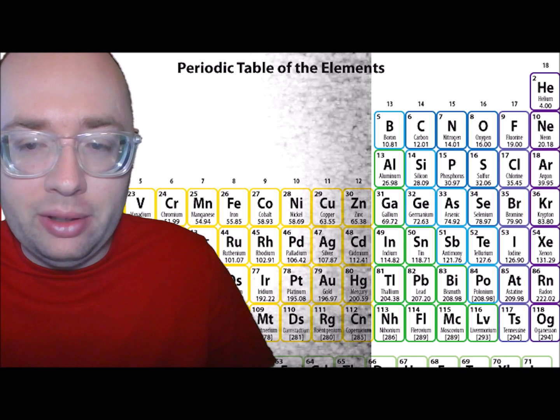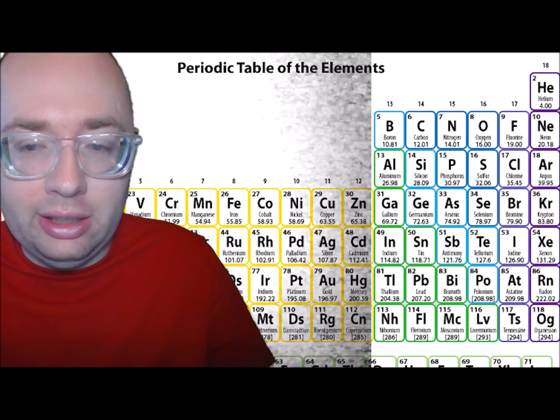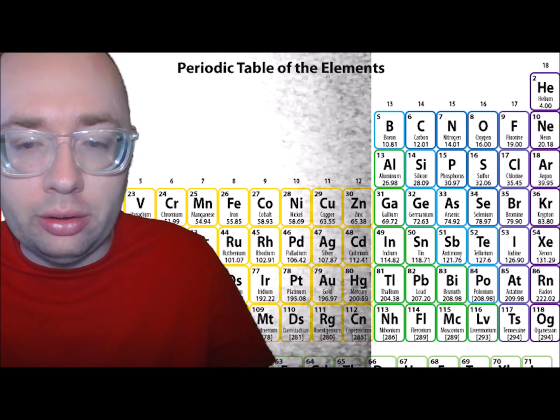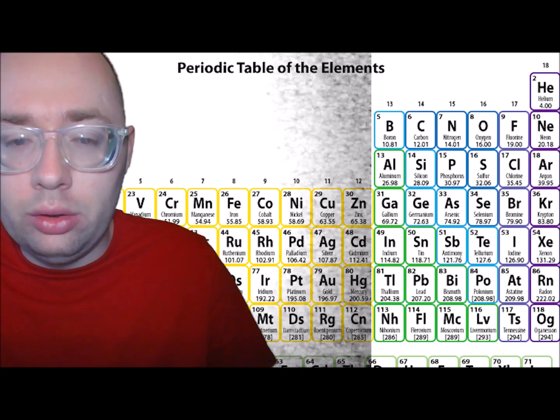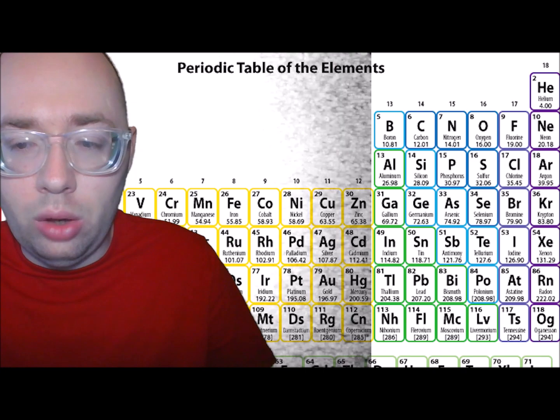Each element has its own name and abbreviation in the periodic table. Some of the abbreviations are easy to remember, like H for hydrogen. Some are a bit harder, like Fe for iron or Au for gold. For gold, the Au comes from the Latin word for gold, aurum.